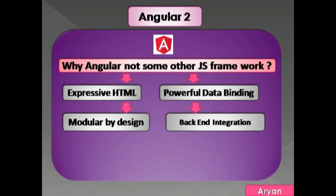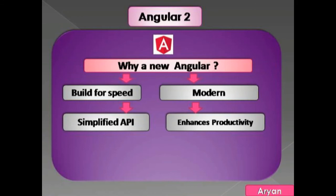The next question is: why was a new Angular built when AngularJS already existed? The first reason is speed — Angular is built for speed. It has faster initial loads, faster change detection, and improved rendering times.